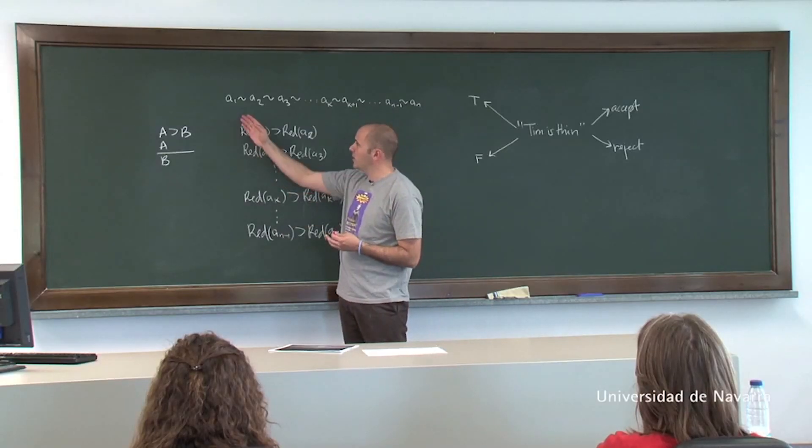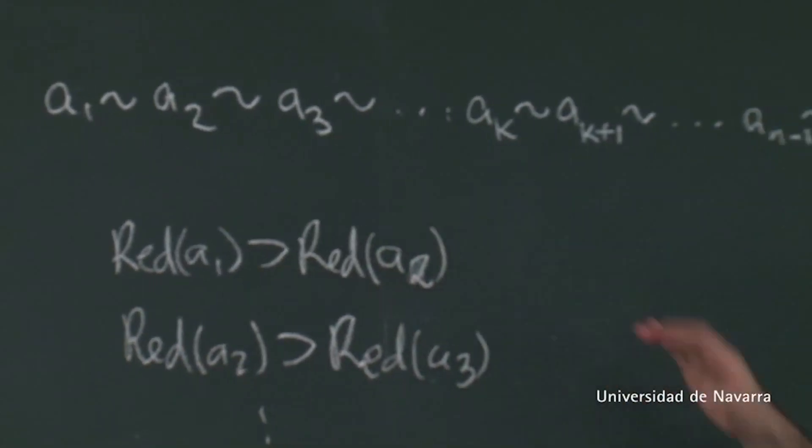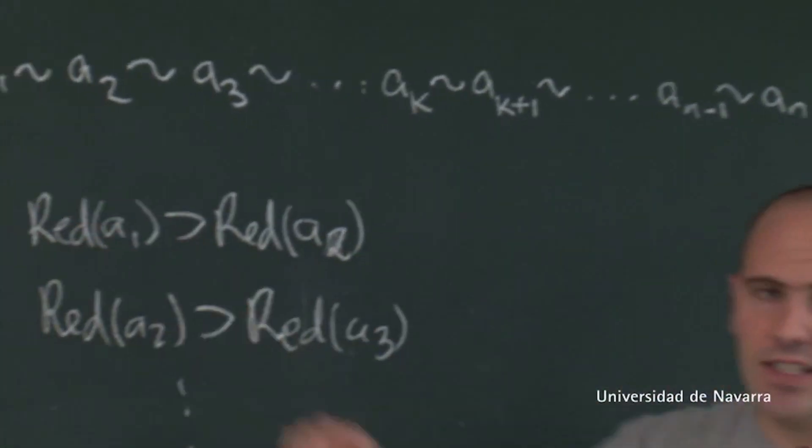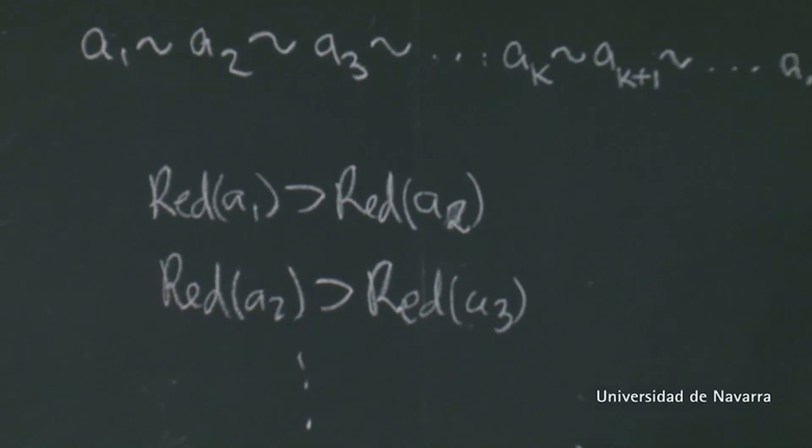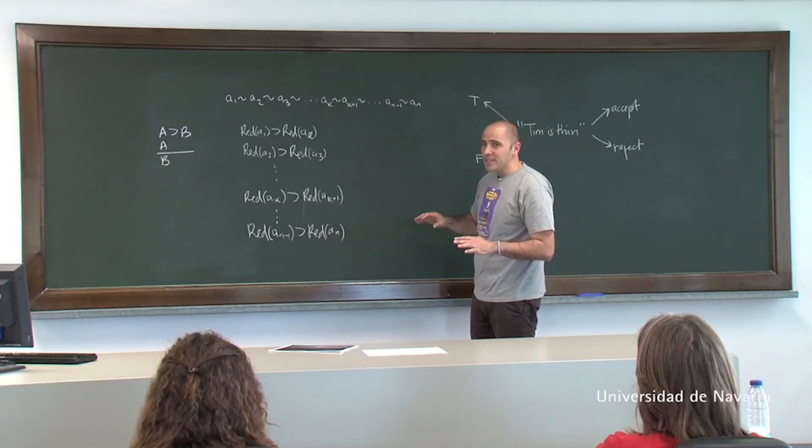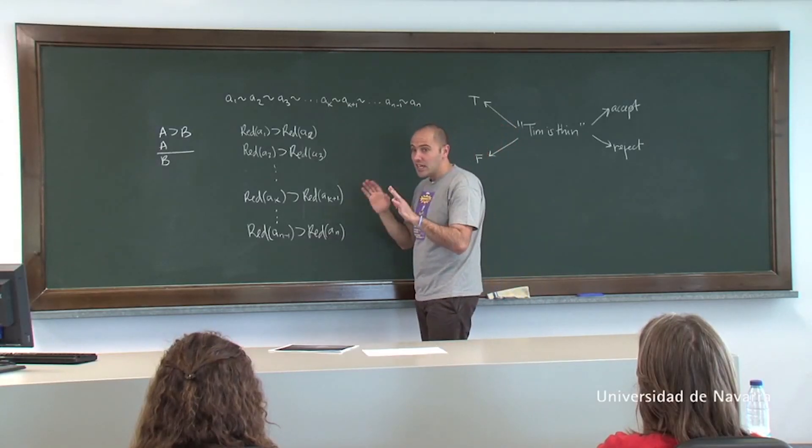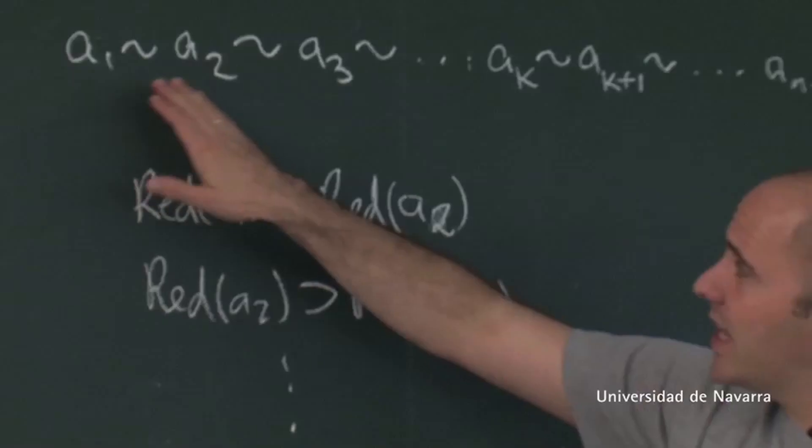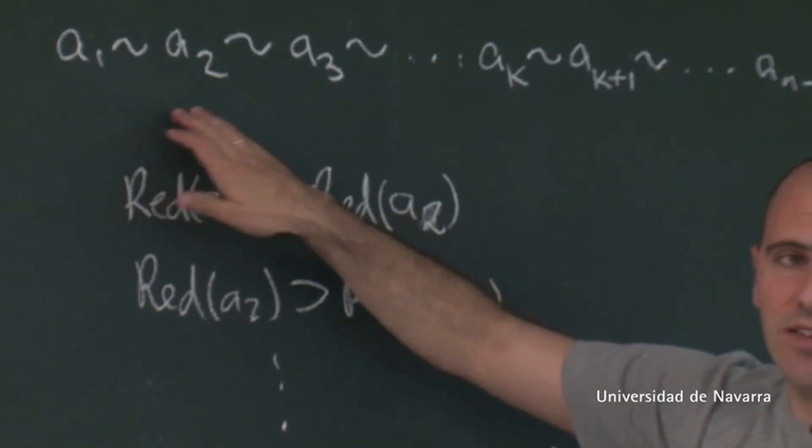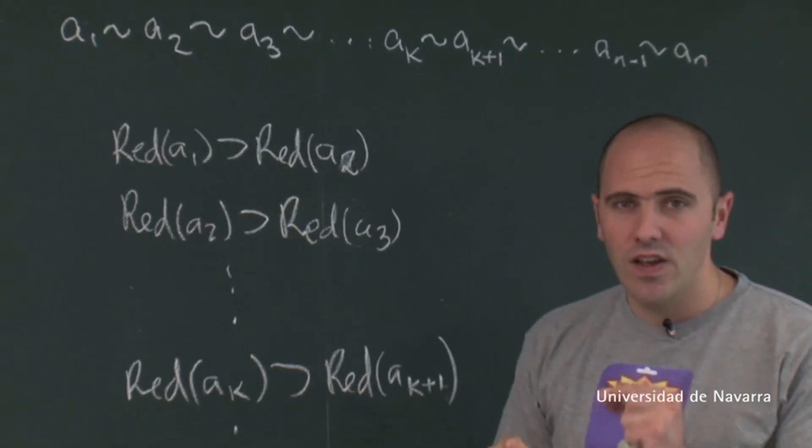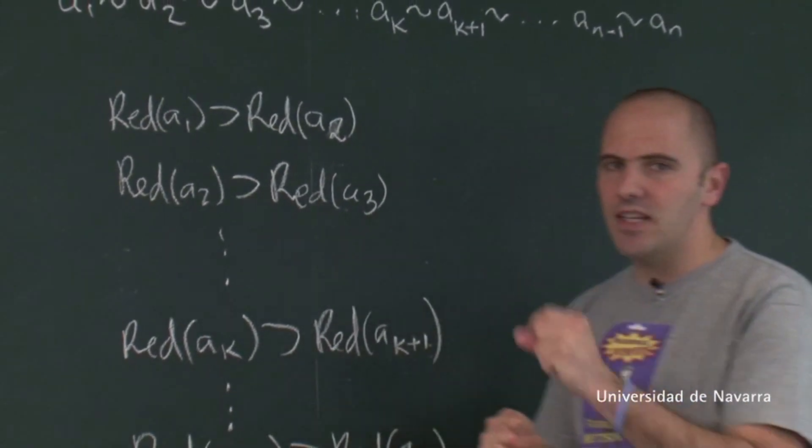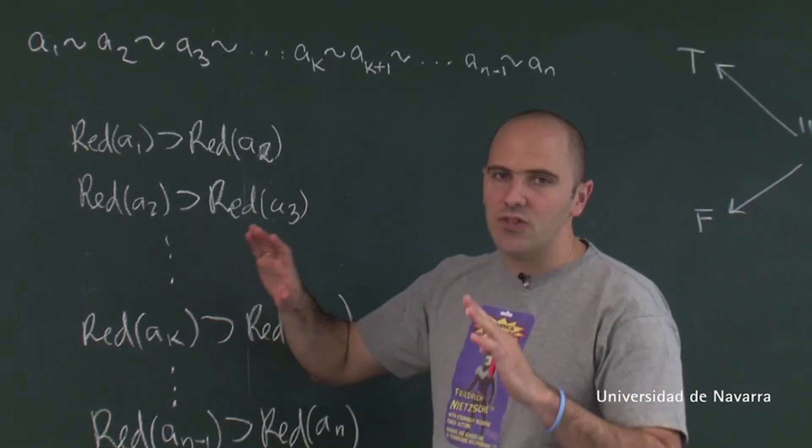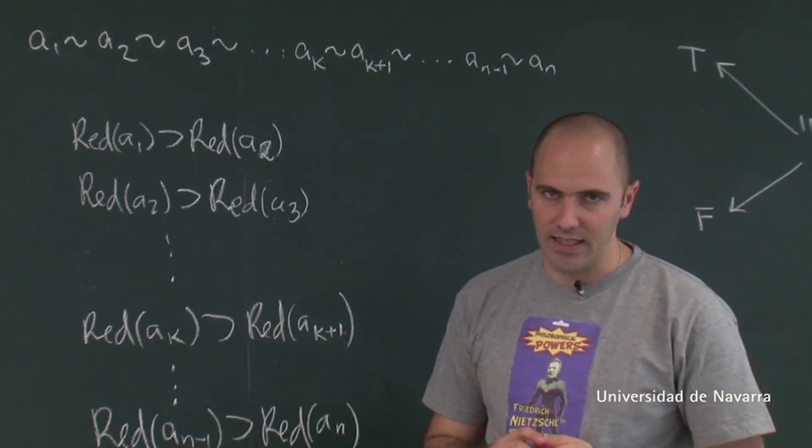Suppose that we've got a series of objects, of patches of color. The first is clearly red. The last one is clearly yellow, and so clearly not red. But the funny thing is that for any object in the series, this object is extremely similar to its neighbors, so that you cannot discriminate them in color by the naked eye.